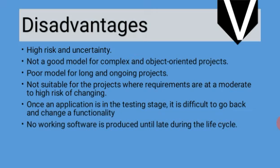Disadvantages of the V model: it is high risk and uncertain, similar to the waterfall model. It is not good for complex and object-oriented projects. It is a poor model for long and ongoing projects where requirements change over time. Projects at moderate to high risk of changing requirements are not suitable. Once an application is in the testing stage, it is difficult to go back and change functionality, and no working software is produced until late in the life cycle.